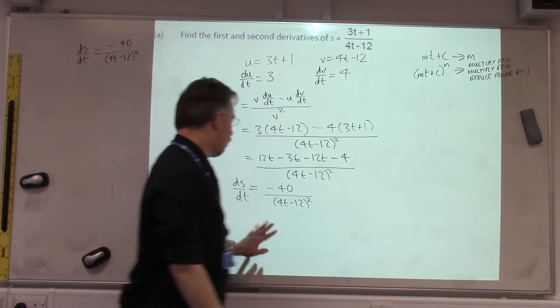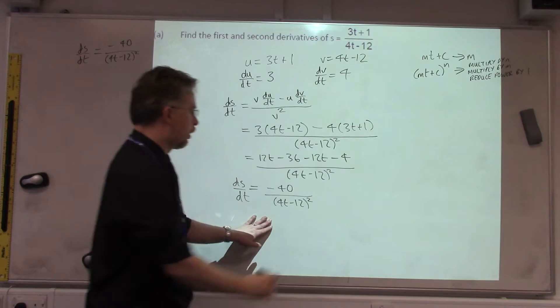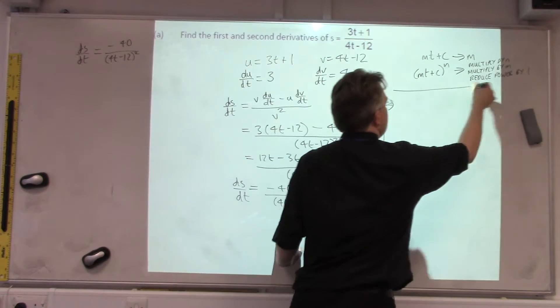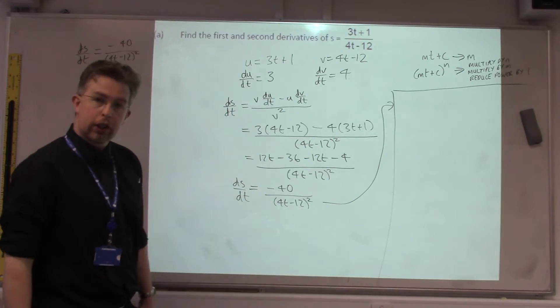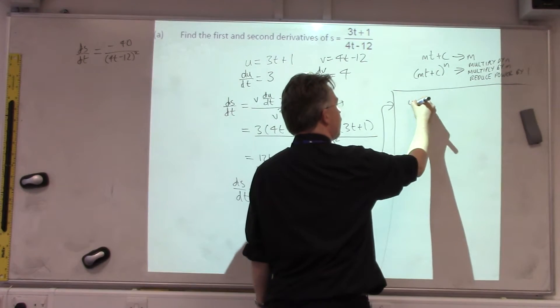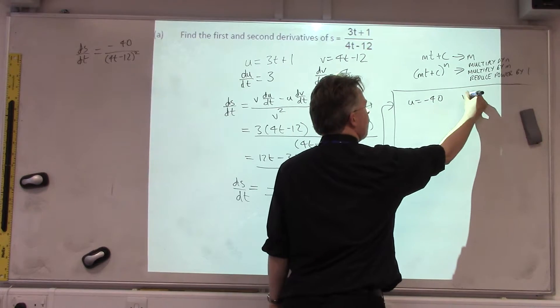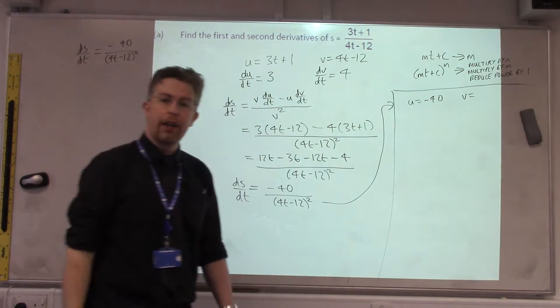So, we're going to use the quotient rule for this function, so we're going up here, the space. So, the U is the top, which is minus 40. The V is the bottom, which is 4T minus 12 squared.